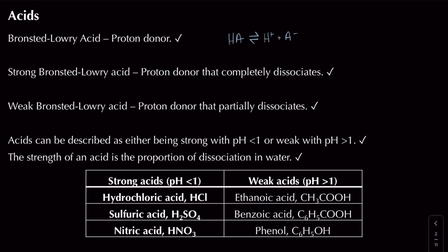At A-level we know an acid can be a strong acid or a weak acid. A strong acid is a proton donor that completely dissociates — in terms of equilibrium it lies very far to the right, so our HA has dissociated to form lots of H⁺ and A⁻. We show this with a single reaction arrow to indicate complete dissociation.